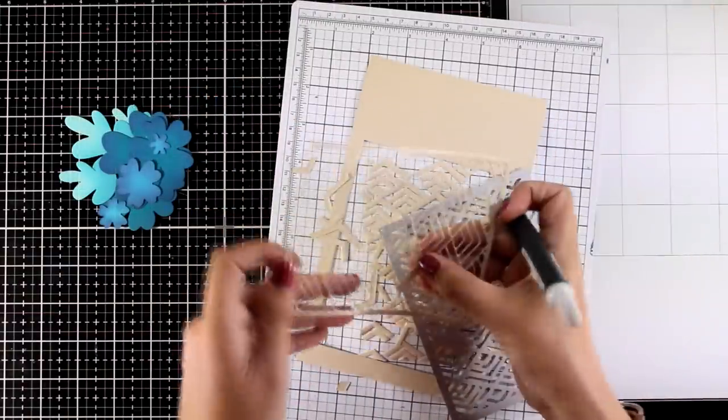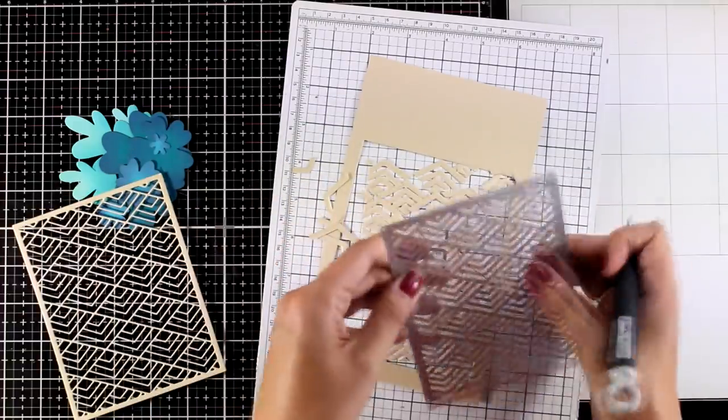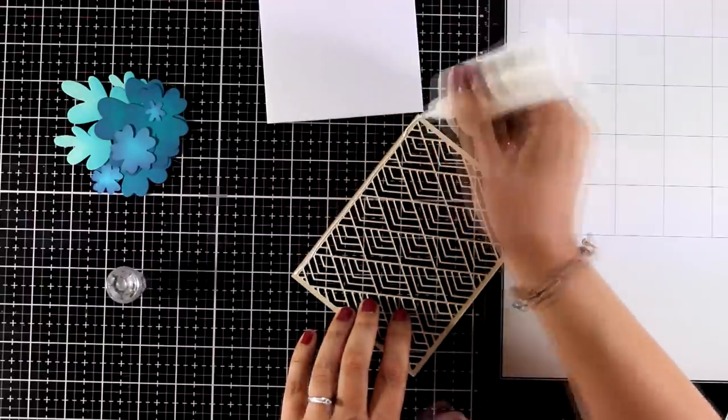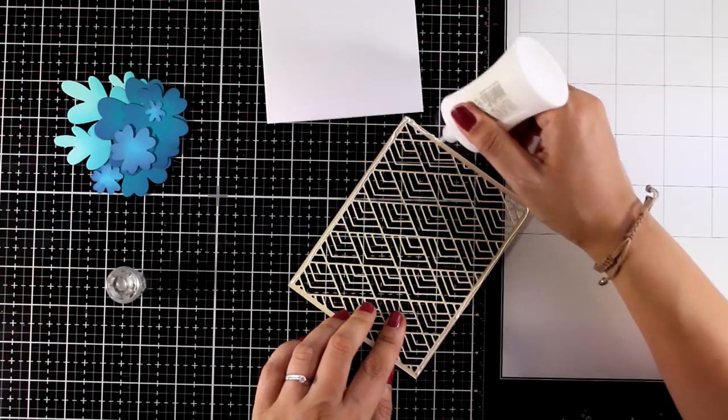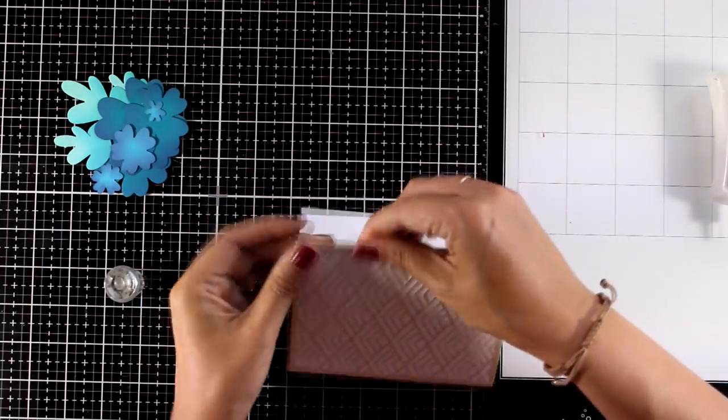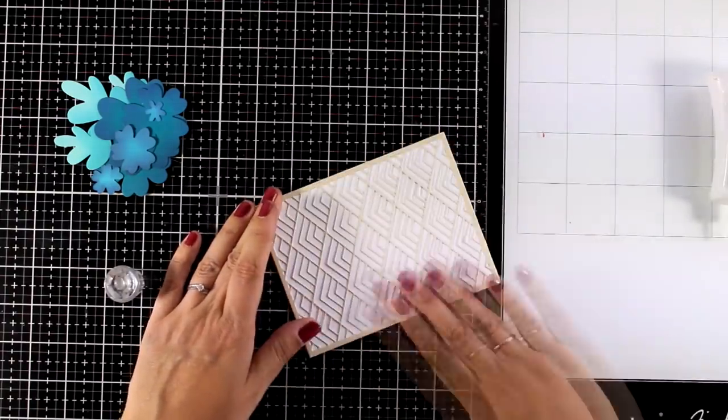And I also die cut the cover die. This is the Stacked Diamonds cover die which I absolutely love. I find it really versatile. It fits pretty much any design and I think it is going to add a really subtle and interesting look on your backgrounds. So here I cut it out from vanilla cardstock and I'm going to stick it on top of my card base.